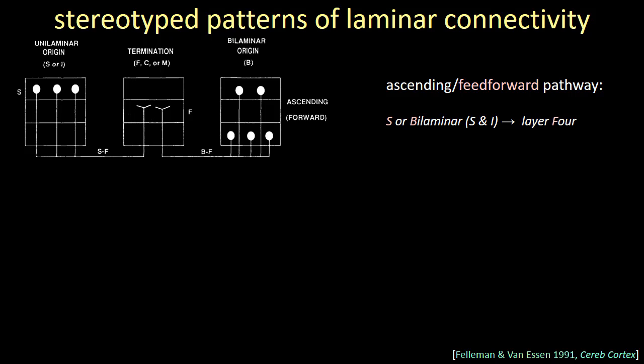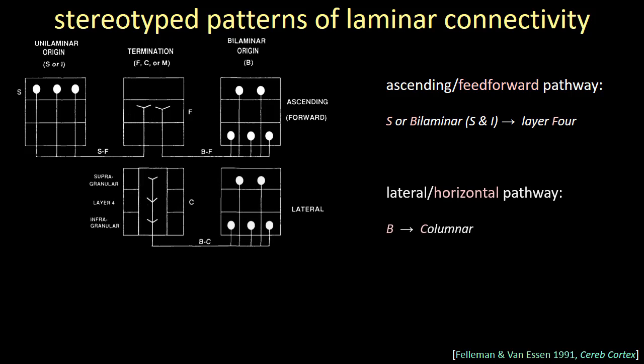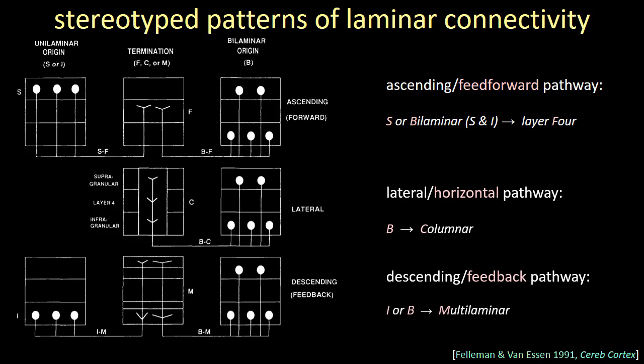Perhaps the best-known feature of cortical layers is that many are sites of inputs and outputs along feedforward, feedback, and horizontal pathways. Many look to the seminal paper by Felleman and Van Essen for the basic scheme — a meta-analysis based on termination patterns of projections across areas. They defined ascending or feedforward pathways where outputs were supralaminar or bilaminar and projections were to layer 4; lateral or horizontal pathways where outputs were bilaminar and terminations were columnar; and descending or feedback pathways where outputs were infragranular or bilaminar and terminations were multilaminar.